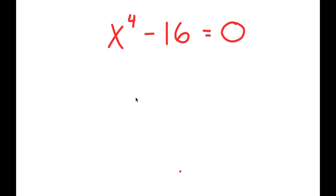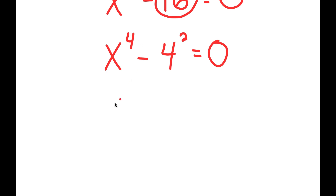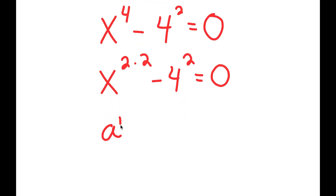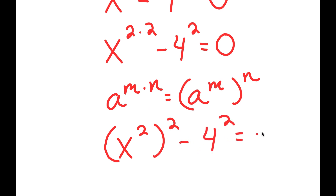A better way to do this is to first rewrite 16 as 4 squared. So I get x to the power of 4 minus 4 squared is equal to 0. Now x to the power of 4 is the same thing as x to the power of 2 times 2, and if I have something in the form a to the power of m times n, this is equal to a to the power of m to the power of n. So x to the power of 2 times 2 is the same thing as x to the power of 2 to the power of 2, and I have this minus 4 squared is equal to 0.